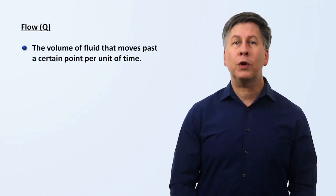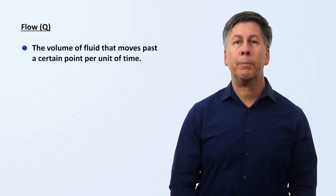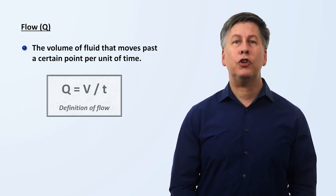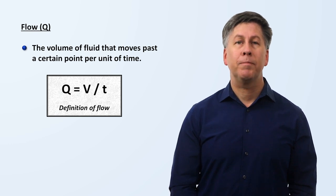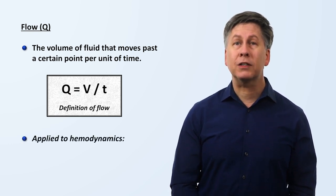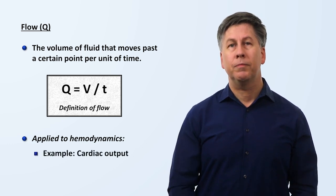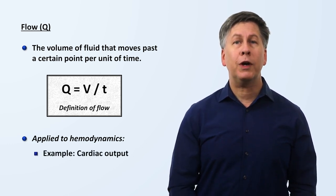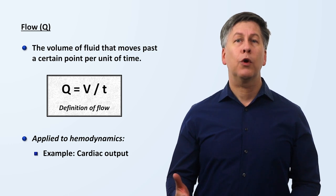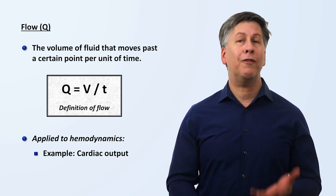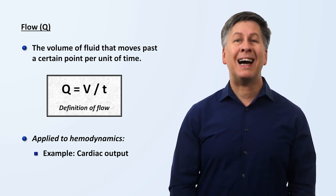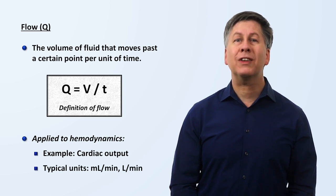I'll move on to flow, often abbreviated as Q. Flow is the volume of fluid that moves past a certain point per unit time. We can represent that mathematically as Q equals V for volume over time. When applied to hemodynamics, the obvious example of flow is cardiac output. Flow in hemodynamics, whether we are talking about cardiac output or flow to a specific organ or vascular bed, is given in either milliliters per minute or liters per minute.